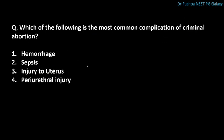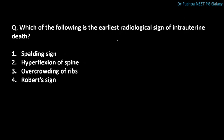What is the most common complication of criminal abortion? The correct answer is hemorrhage. The most common complication causing death is sepsis. What is the earliest radiological sign of intrauterine death? The correct answer is Robert sign, seen as early as 12 hours — it represents a gas shadow in the aorta. Spalding sign means overlapping of skull bones.